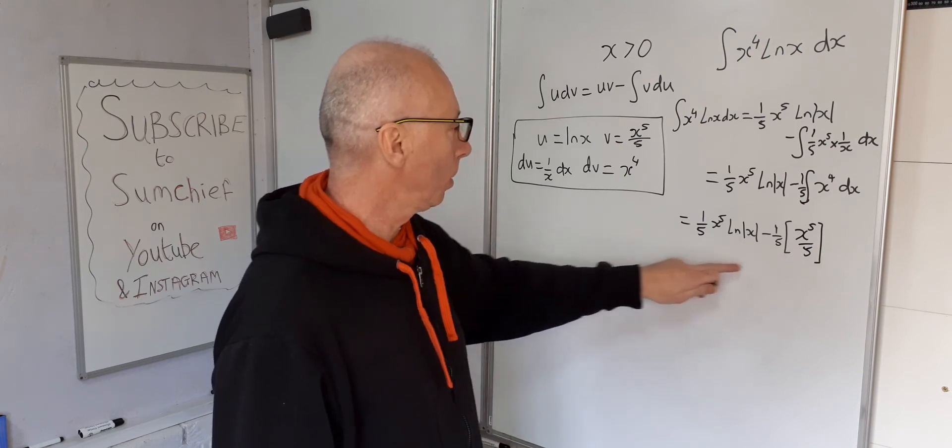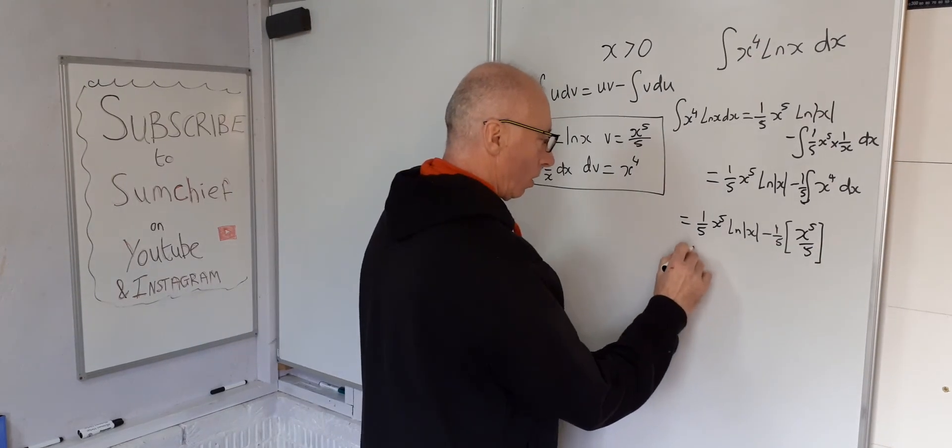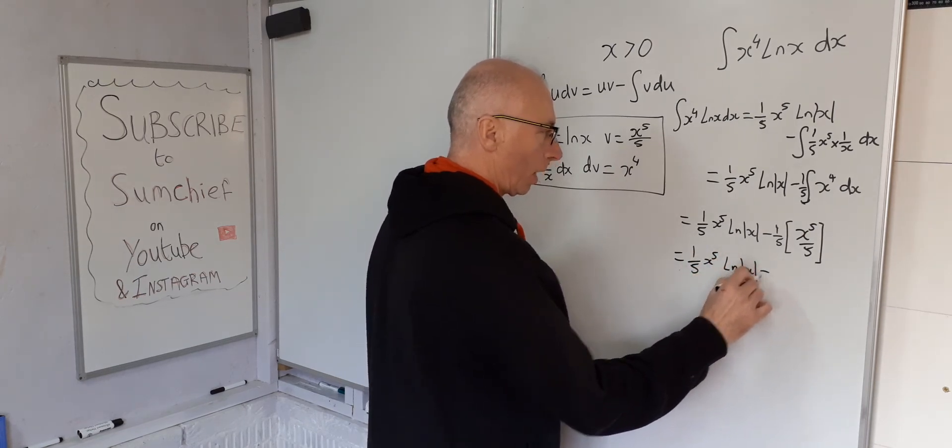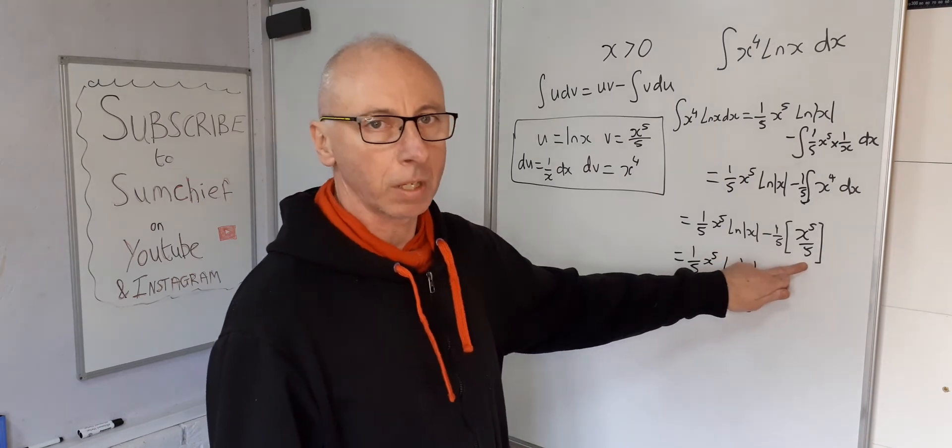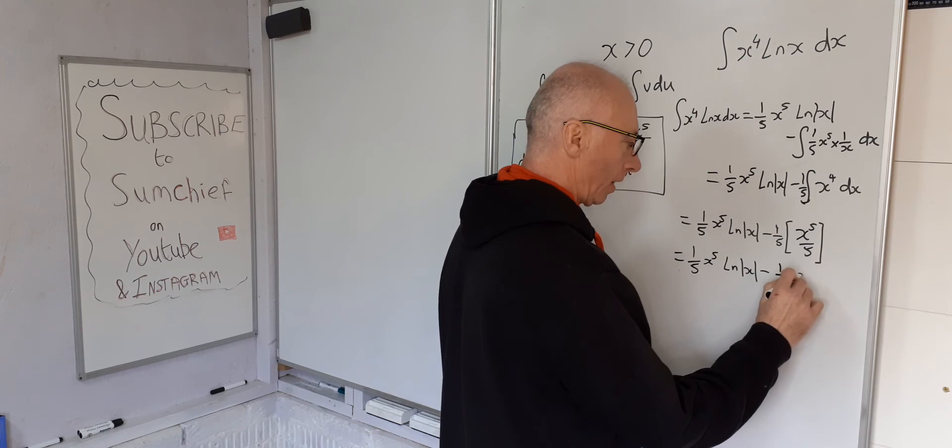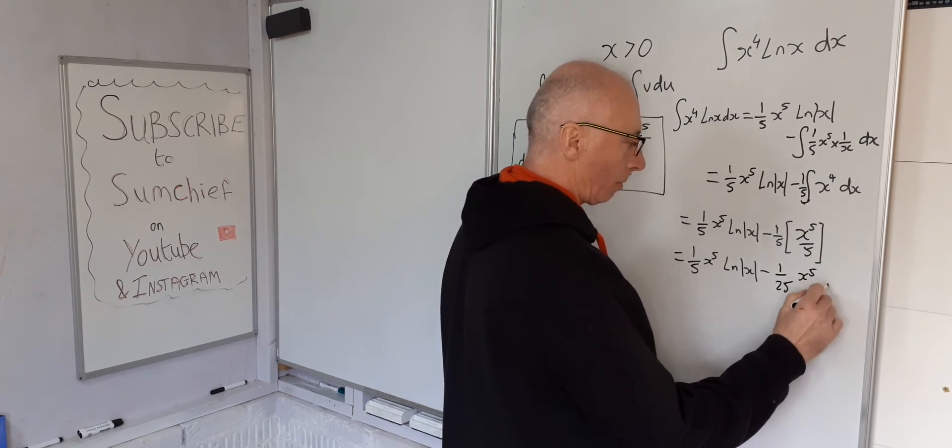We just need to simplify this off a little bit more. So we've got 1 over 5 x to the 5. Natural log of x. Minus 1 over 5 divided by 5 is 1 over 25. And then the x to the 5. And then we can put the plus c.